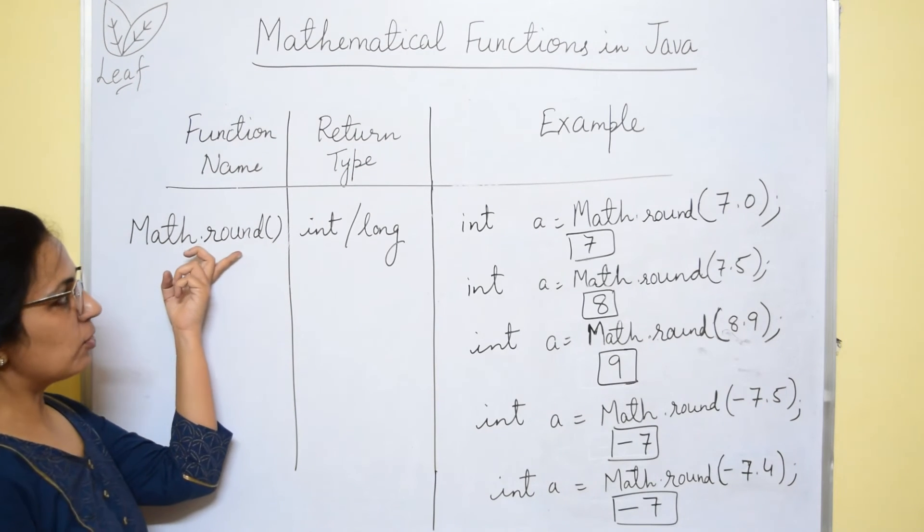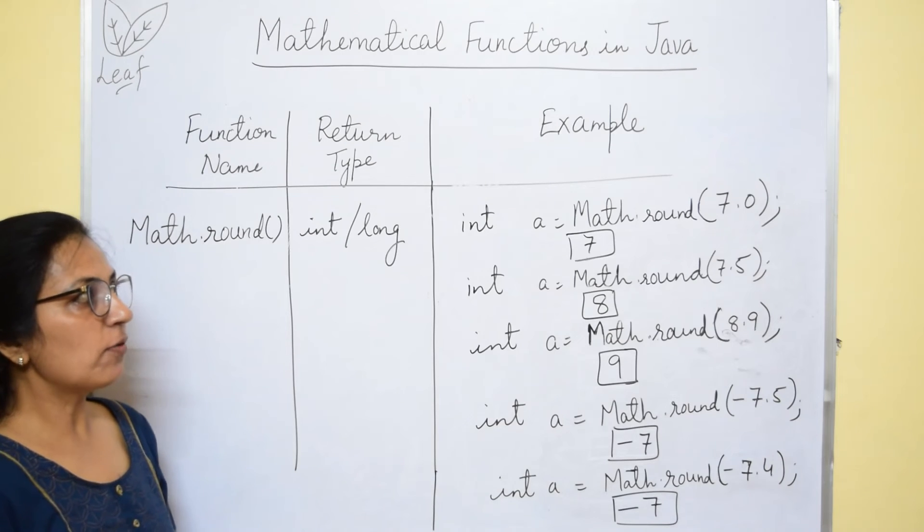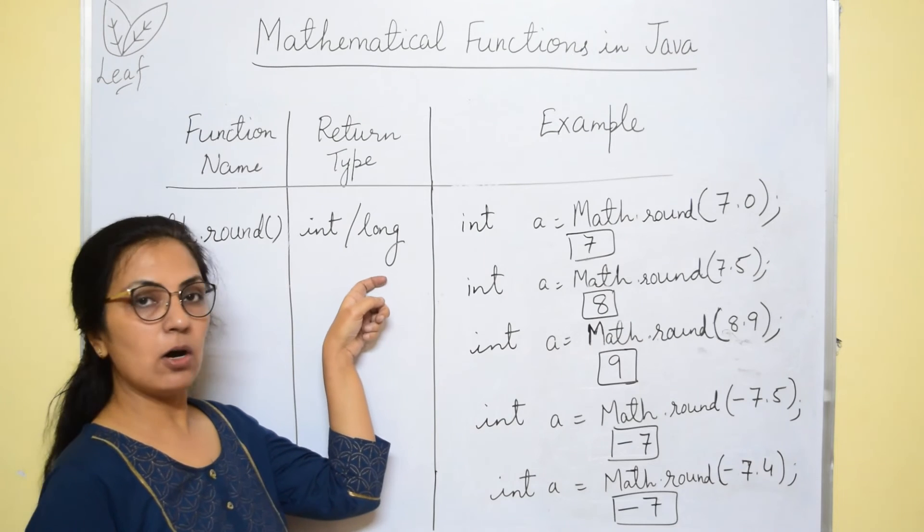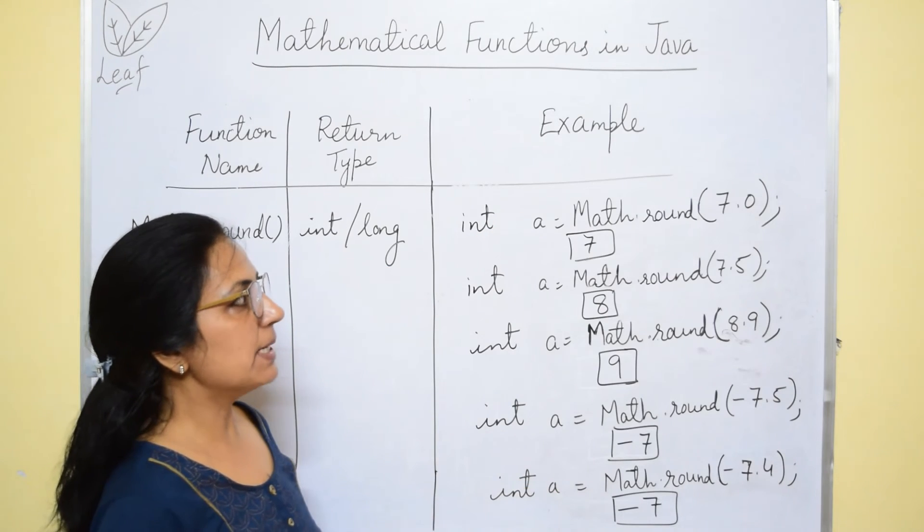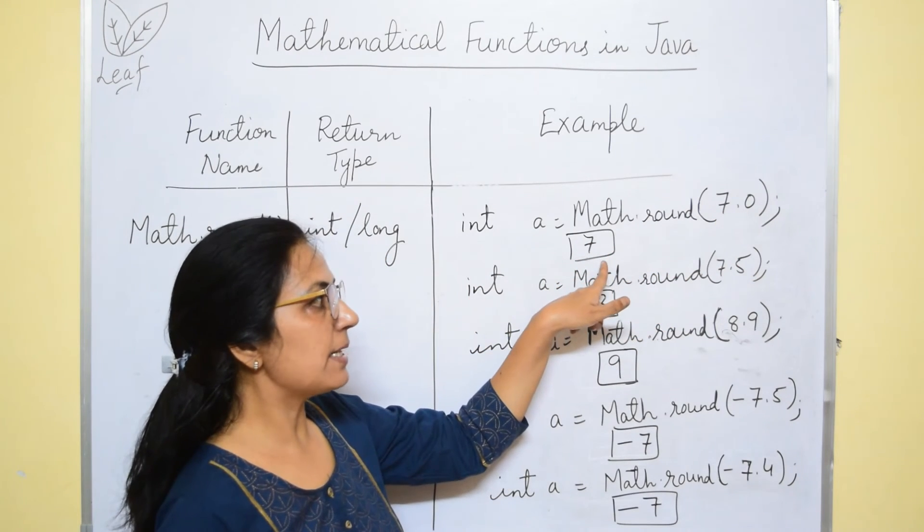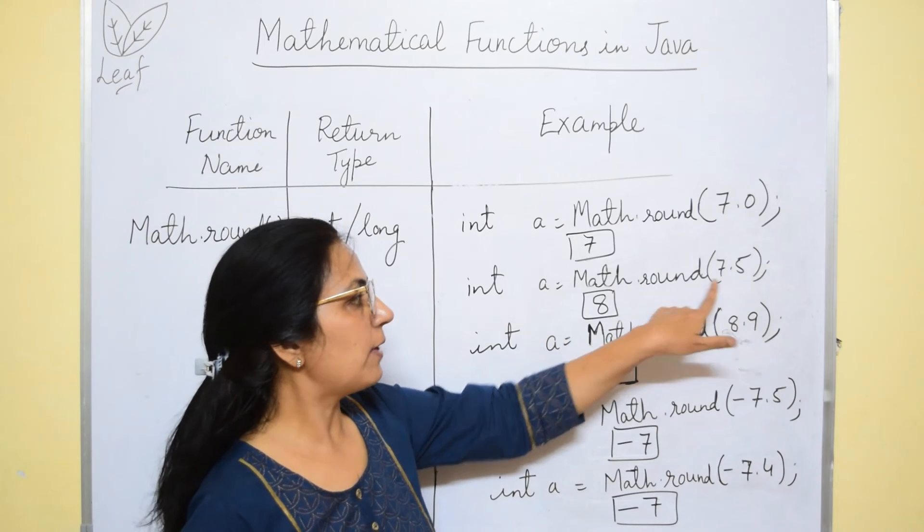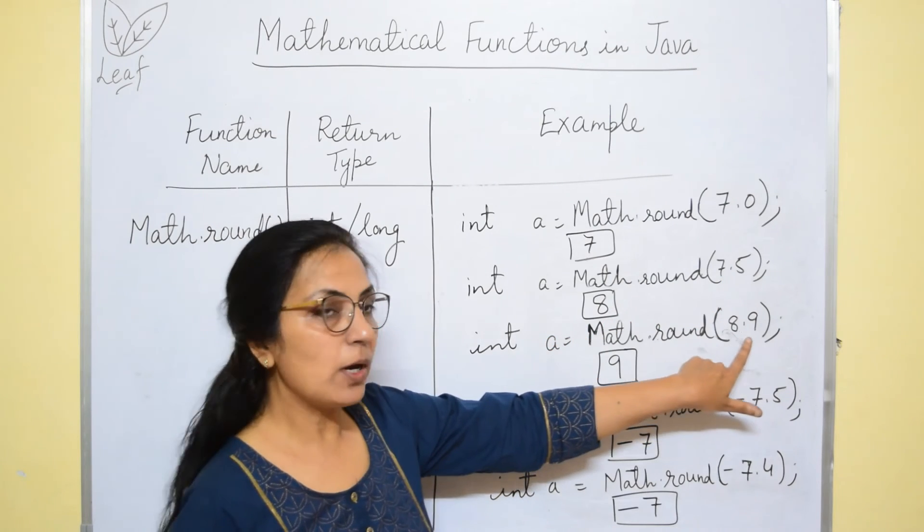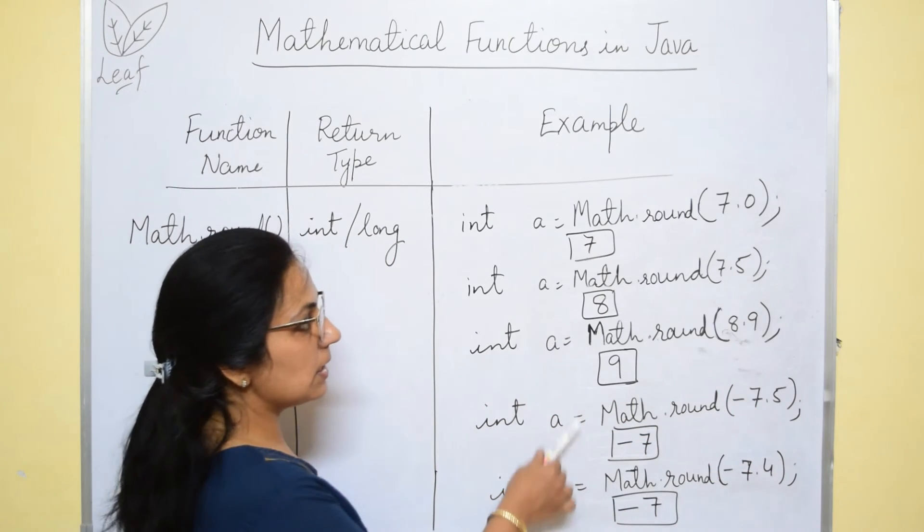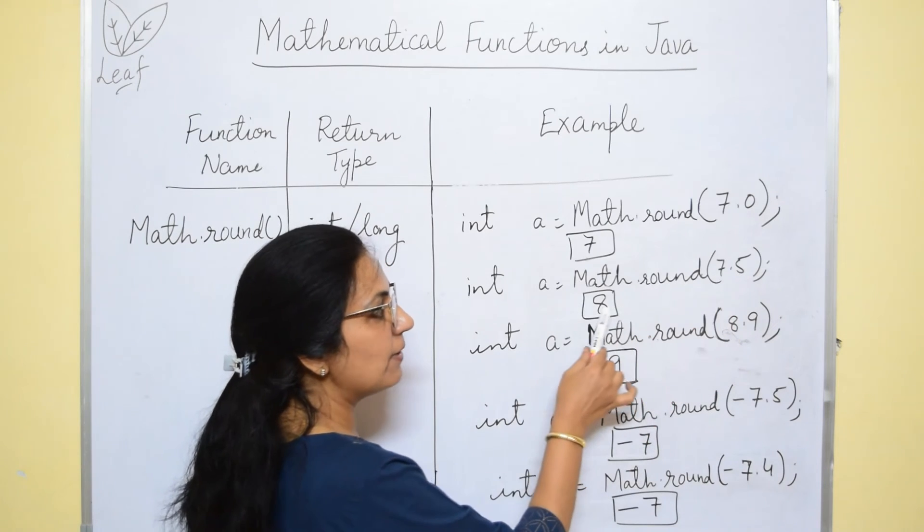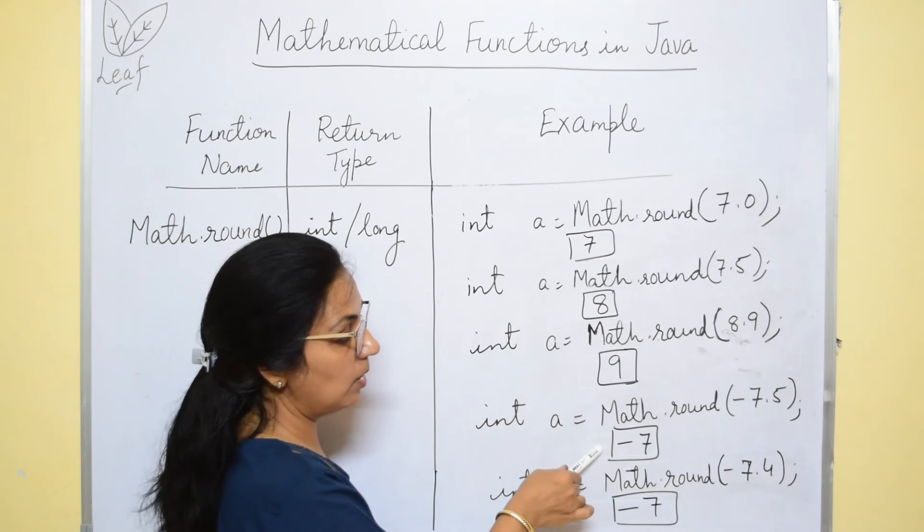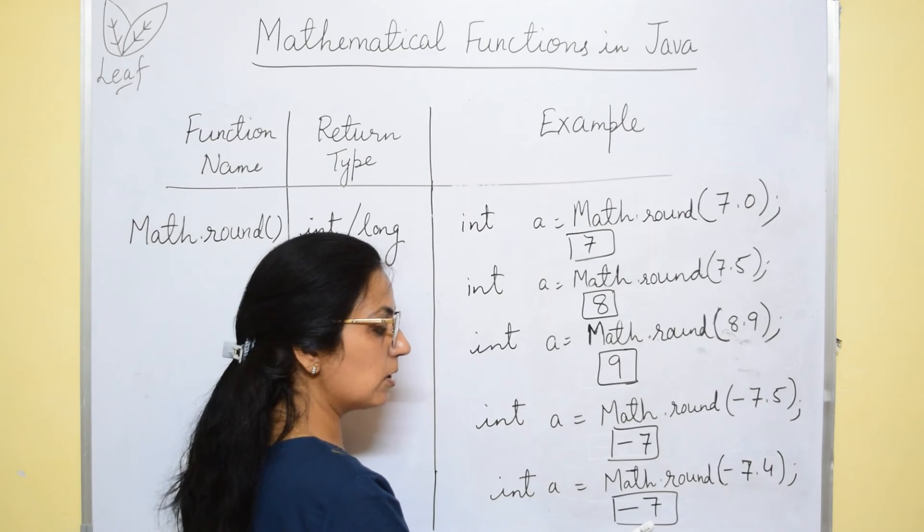Next we have math.round function. It rounds off the value and returns the answer in integer or long type. We have few examples here. Let's go through them. Math.round of 7.0 answer will be 7. 7.5 will be 8. 8.9 will be 9. -7.5 is -7. Now see these two. Round of 7.5 is next integer. And -7.5 is the same integer value. And -7.4 is also -7.